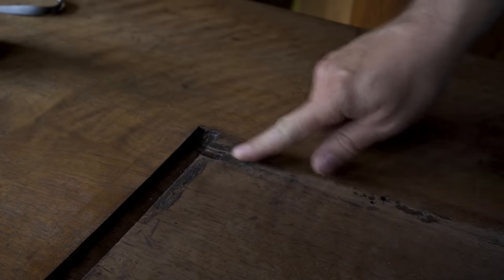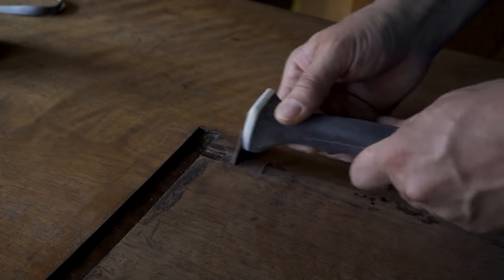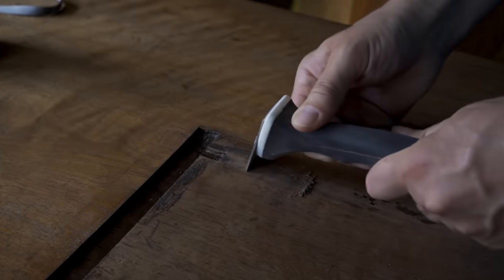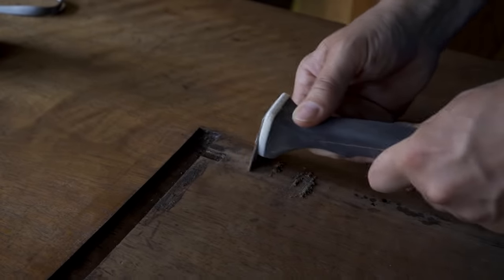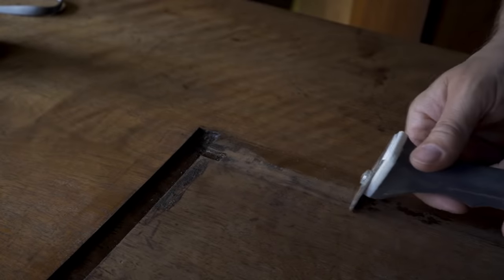There was also some kind of schmutz under where the drawers would sit that wasn't coming off easily with alcohol, so I just scraped that off. Not sure what it was. Could have been spots where the shellac just collected and got really thick when they first put the finish on.